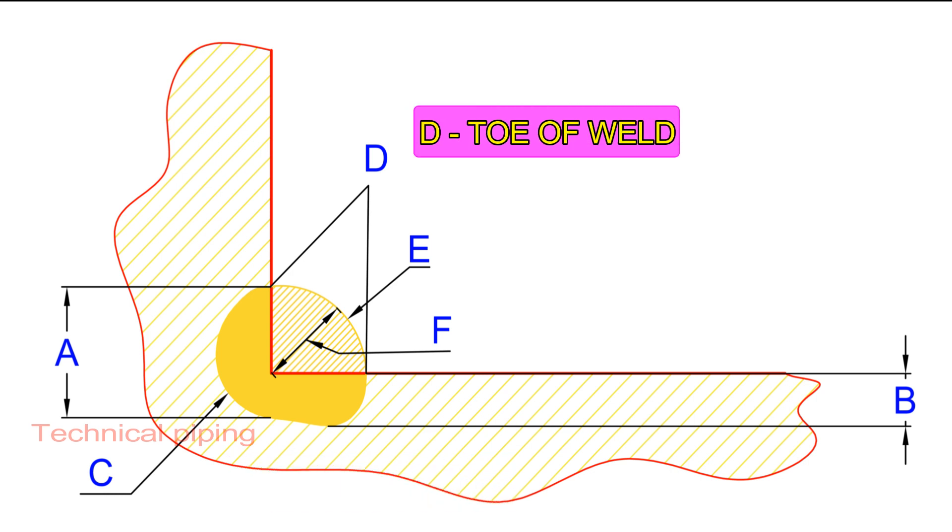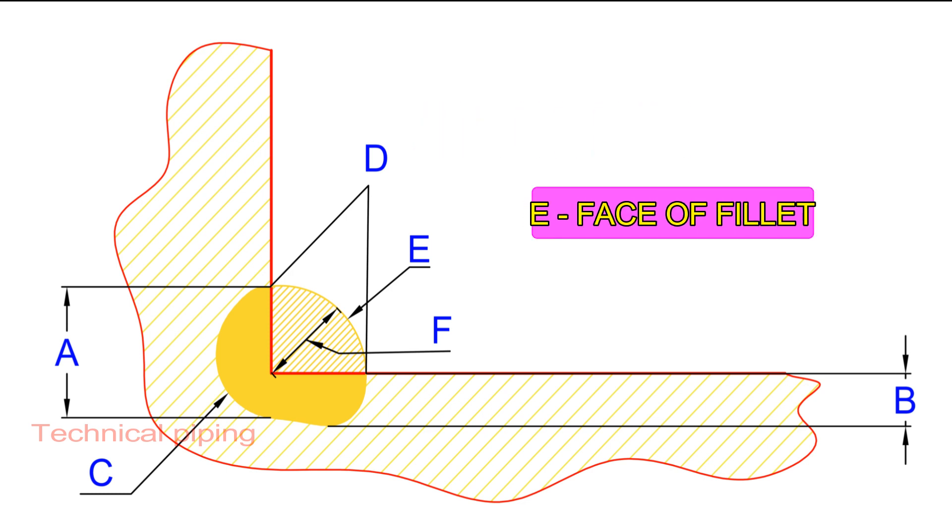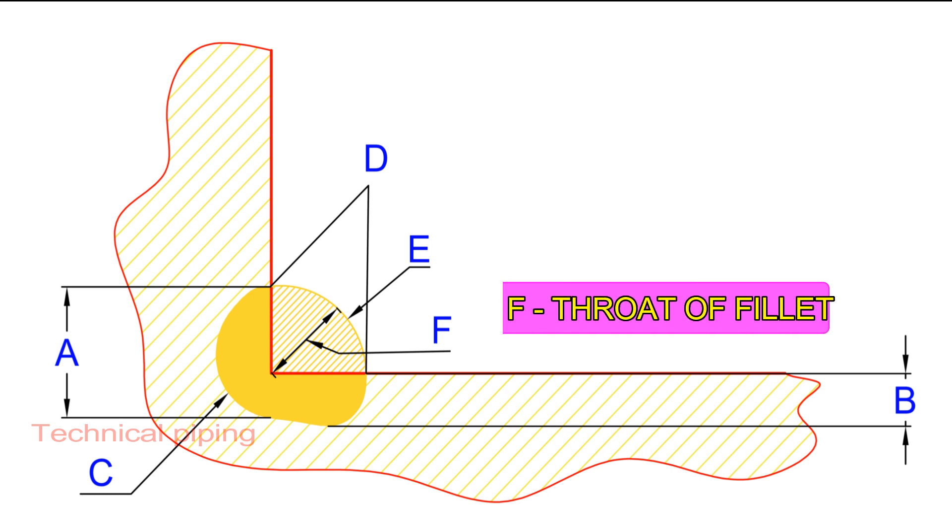Letter D denotes toe of weld. Letter E denotes face of fillet and Letter F denotes throat of fillet.